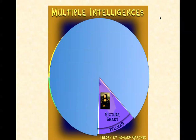Then we have spatial, or visual-spatial, learners. The definition is they think in terms of physical space — kind of like architects and sailors. They are very aware of their environments and like to draw, do jigsaw puzzles, read maps, and daydream. They can be taught through drawings and verbal and physical imagery. Tools include models, graphics, charts, photographs, drawings, three-dimensional modeling, video, video conferencing, television, multimedia, and text with pictures, charts, and graphs.